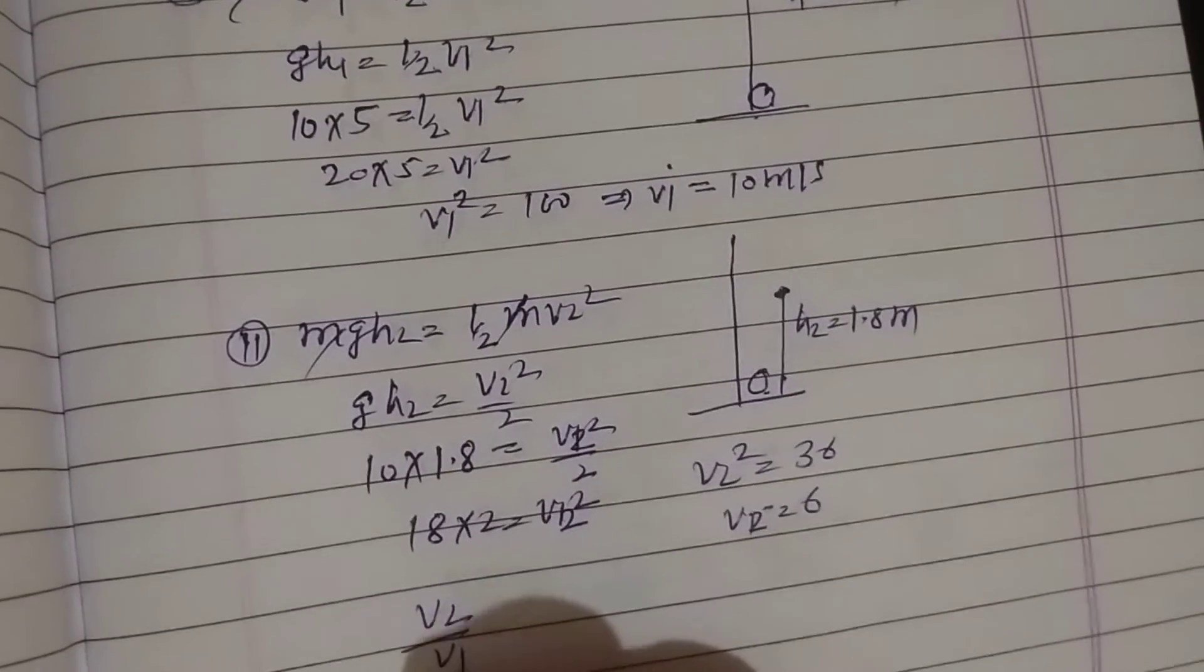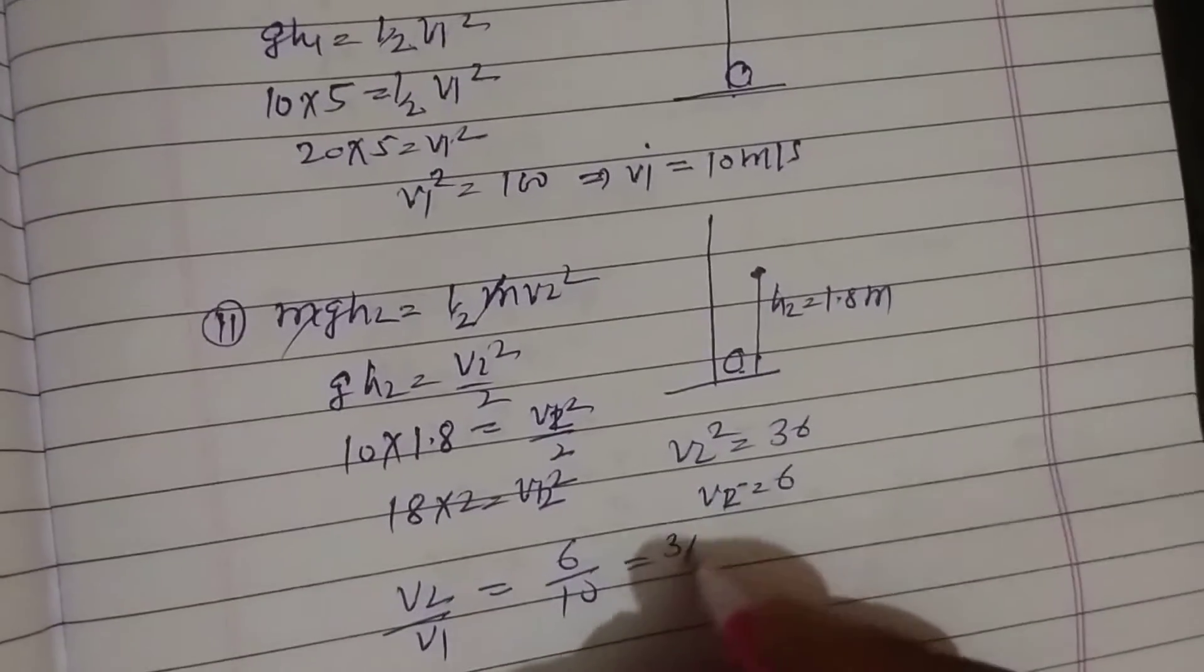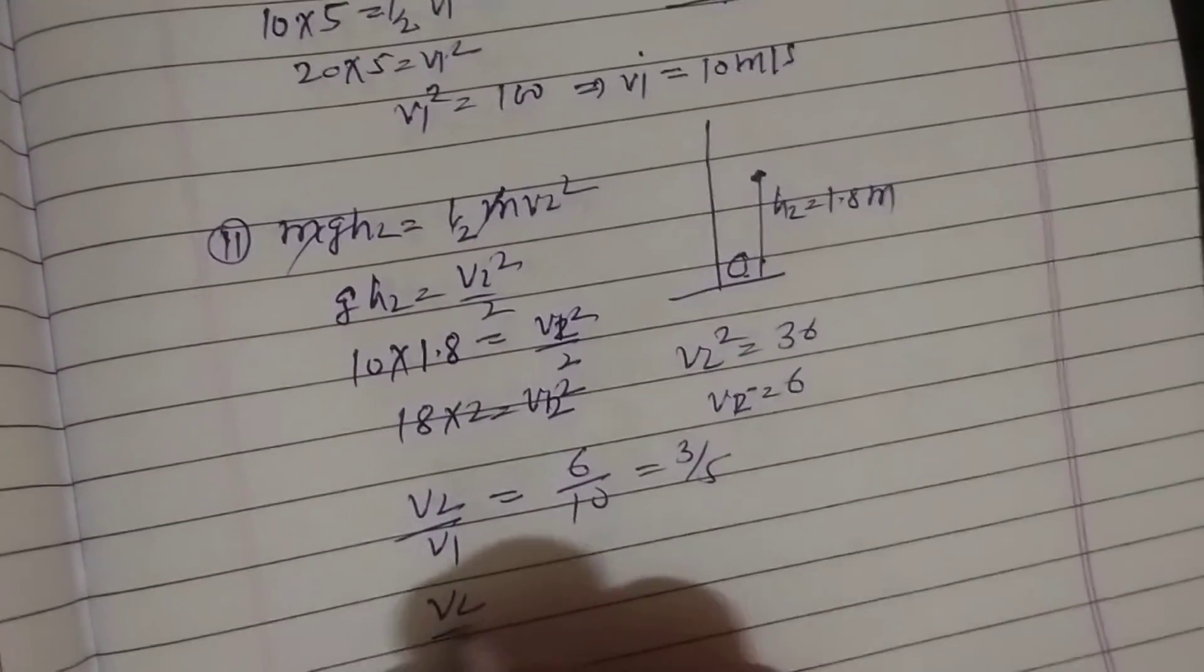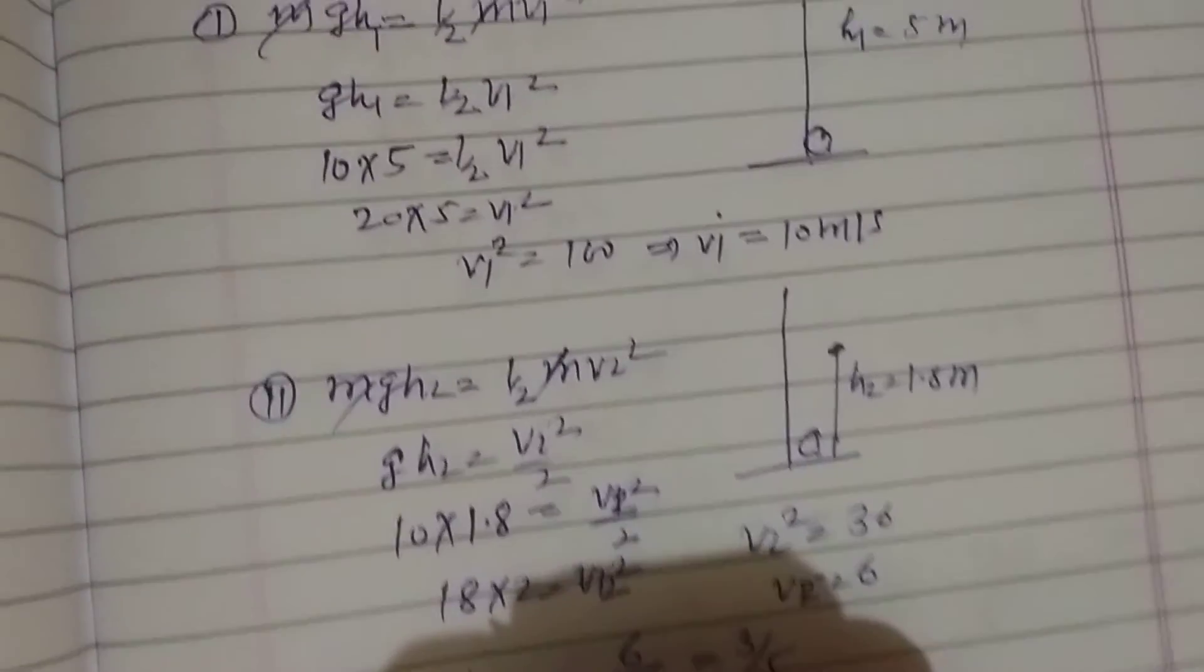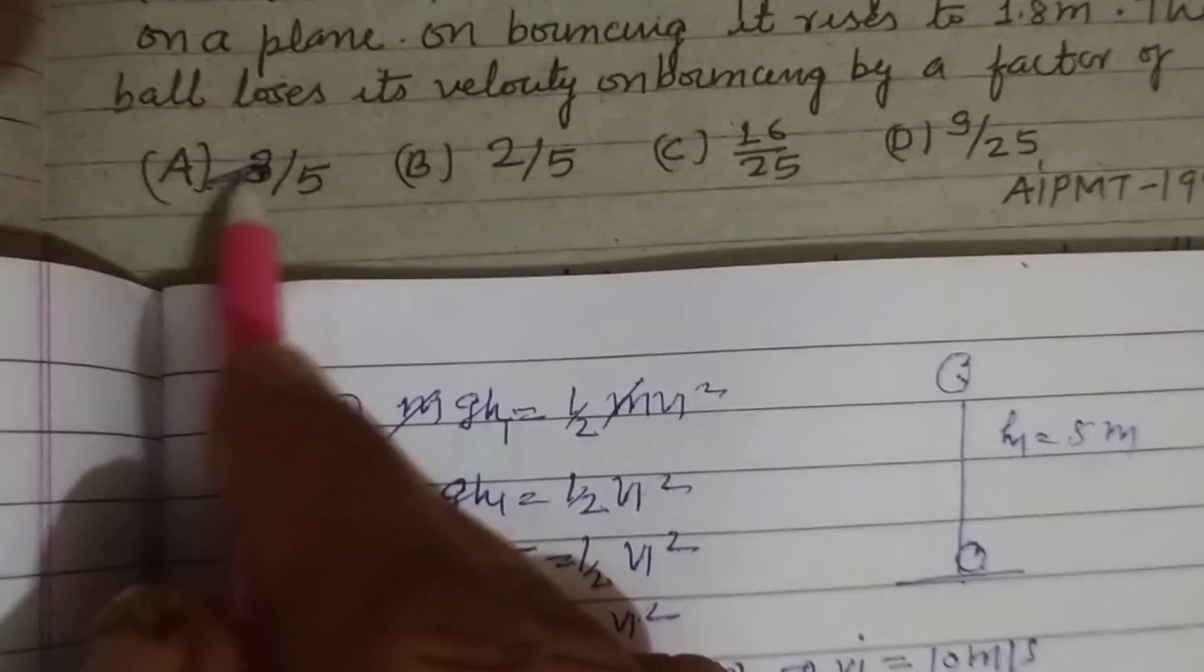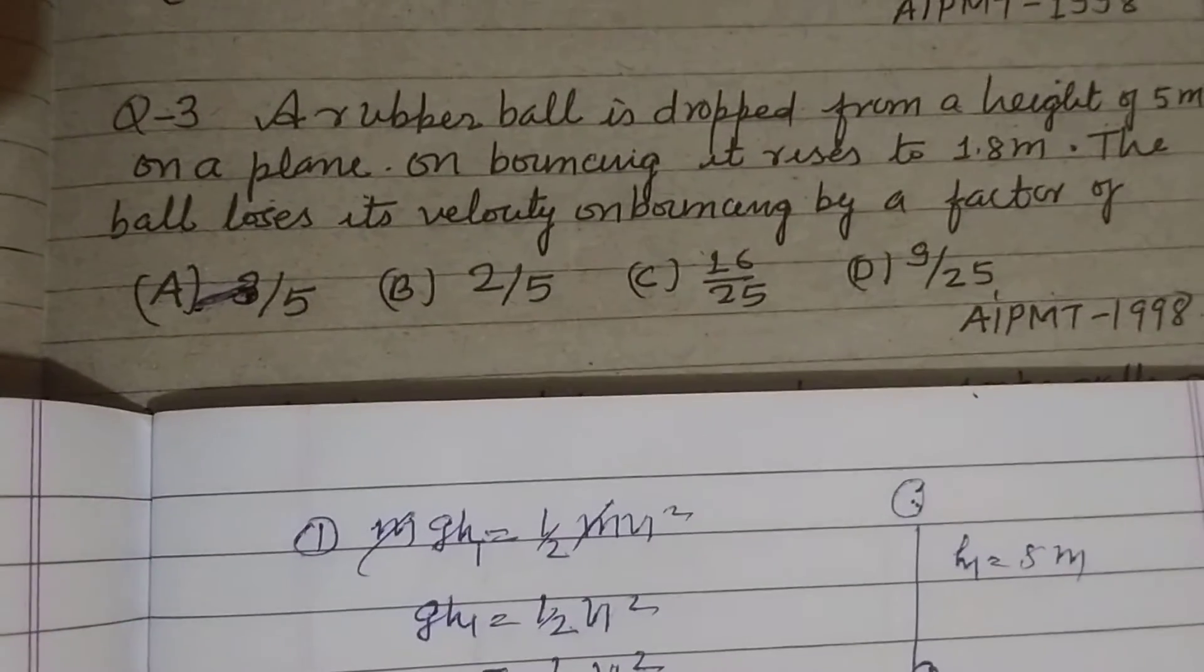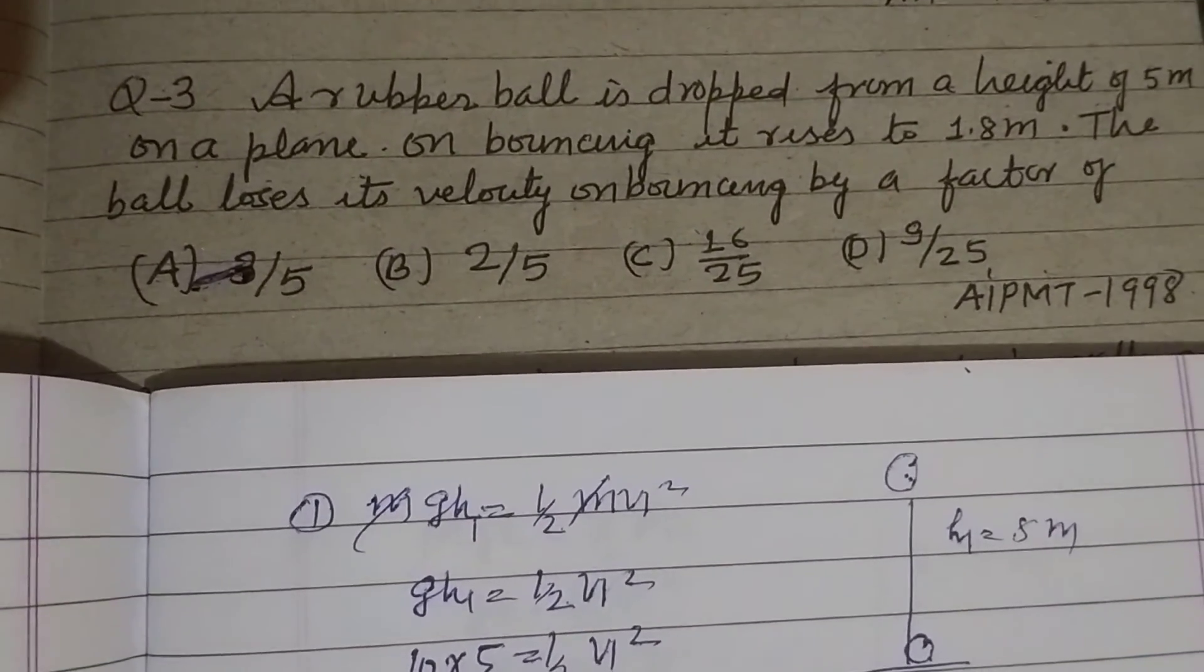Now v2 over v1 equals 6 over 10, which simplifies to 3 over 5. So v2 over v1 equals 3/5, which is option A of this question. The answer is A, I hope you got it. Please like the video and subscribe to the channel. Thanks for watching.